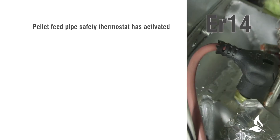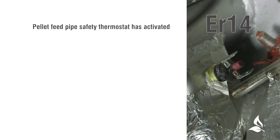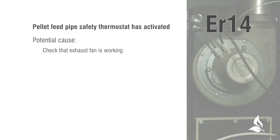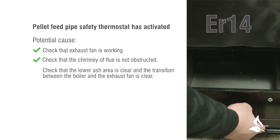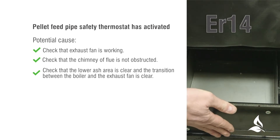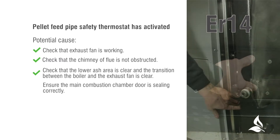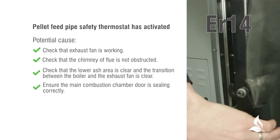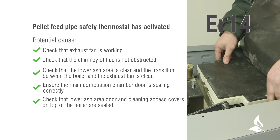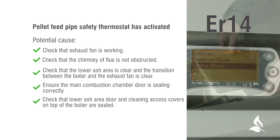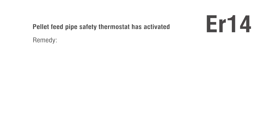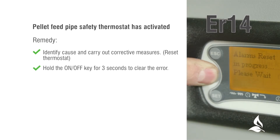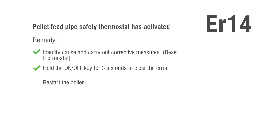ER14: Pellet feed pipe safety thermostat has been activated. Potential causes: check the exhaust fan is working; check that the chimney or flue is not obstructed; check that the lower ash area is clear and the transition between the boiler and the exhaust fan is clear; ensure the main combustion chamber door is sealing correctly; check that the lower ash area door and cleaning access covers on top of the boiler are sealed; check that combustion fan settings are correct and are not set too high. Remedy: identify the cause and carry out corrective measures, reset the thermostat. Hold the on-off key for 3 seconds to clear the error, then restart the boiler.